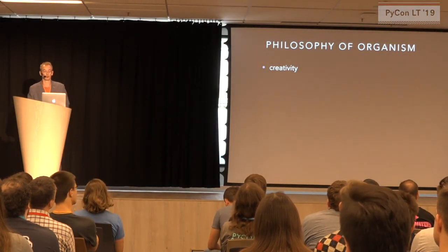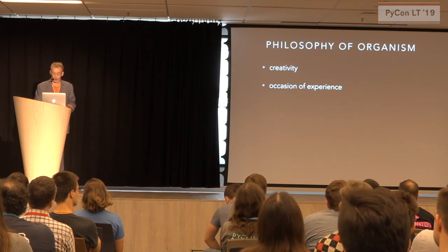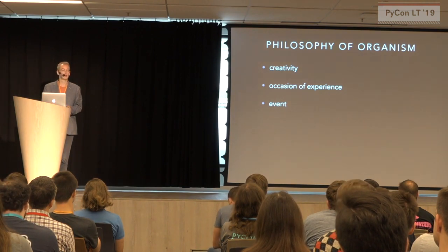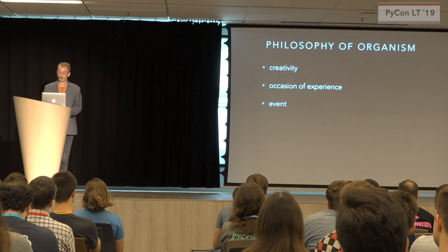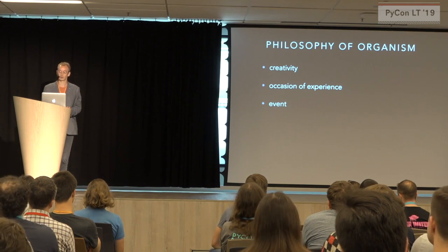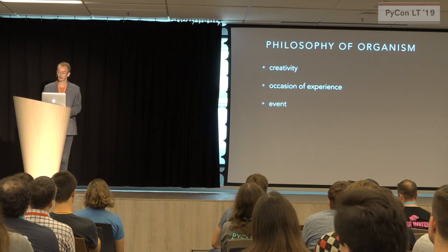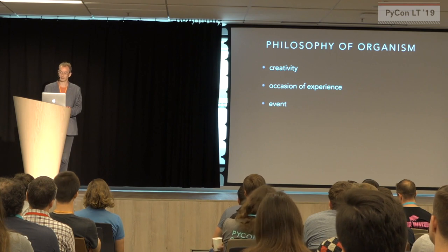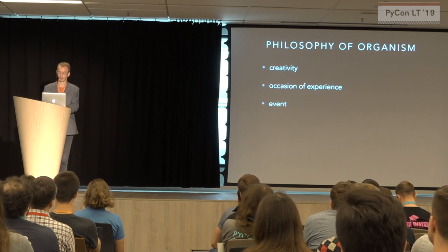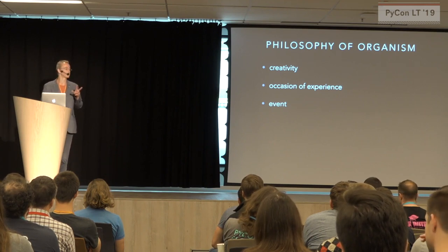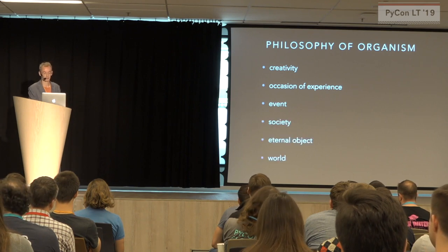Whitehead called his system of ideas in Process and Reality a 'Philosophy of Organism.' Philosophy of Organism is the doctrine that the creative advance of the world is the becoming, the perishing, and the objective immortalities of those things which jointly constitute stubborn facts. Whitehead wrote: 'The philosophy of organism is a cell theory of actuality. Each ultimate unit of fact is a cell complex, not analyzable into components with equivalent completeness of actuality. The cell can be considered genetically and morphologically.' That distinction is taken forward by Christopher Alexander in his later work.